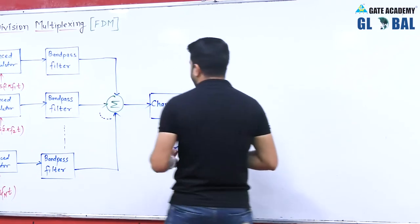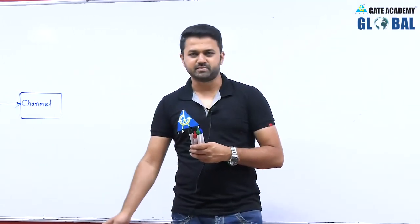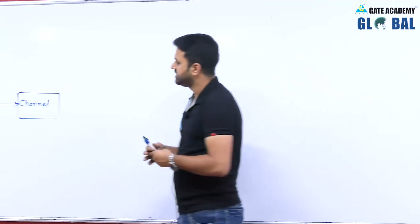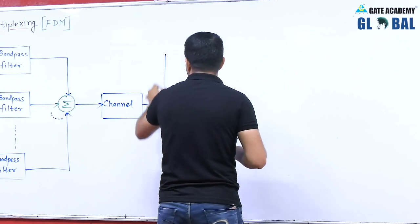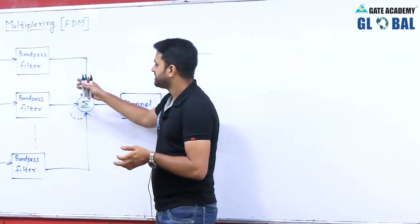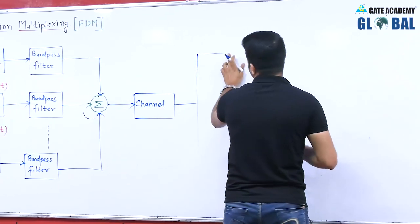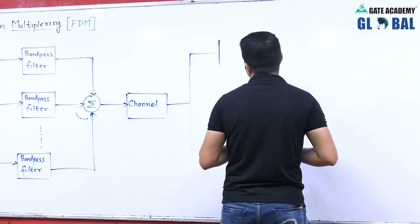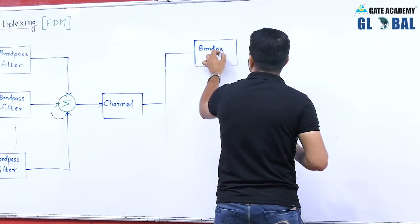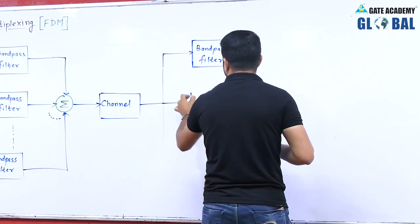Because we have one channel and n number of users, this is called multiplexing — many to one is called multiplexing, and one to many is called demultiplexing. We are combining n number of signals into one signal and then transmitting it through the channel. The output of this channel is the input to the receiver. Because we are using SSB modulation — single sideband suppressed carrier — recovery is possible with the help of a synchronous detector. We place a bandpass filter just to ensure that only the desired term is passed.